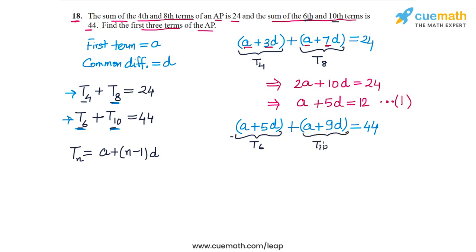This will again give us another linear equation in A and D. We have 2A plus 14D equals 44, and dividing by 2 on both sides we get A plus 7D equals 22. Let's call this equation 2.